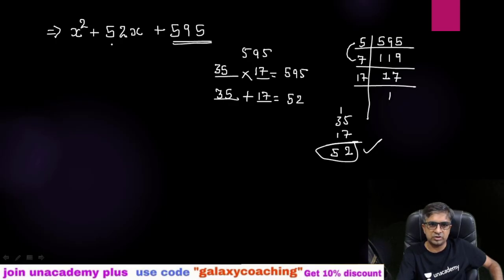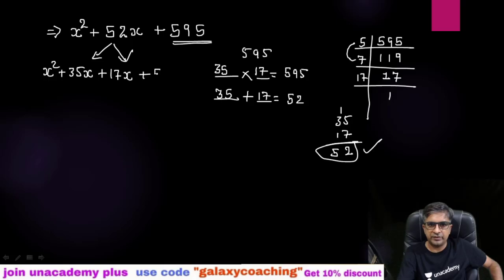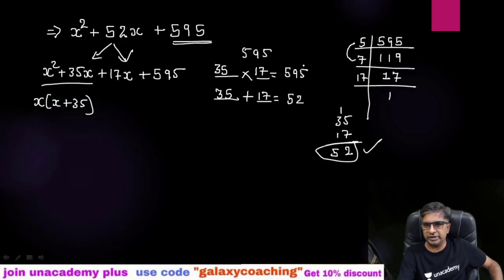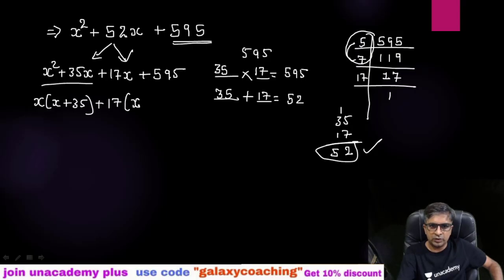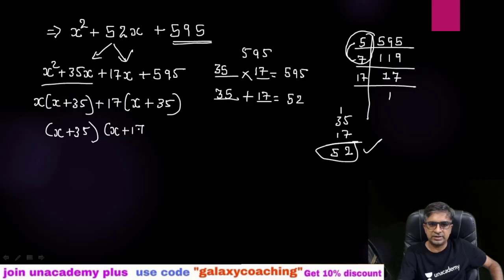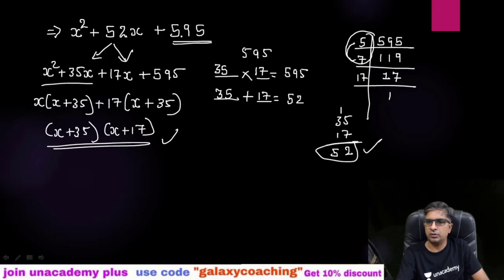So we split the middle term: x² + 35x + 17x + 595. Now take x common from the first two terms: x(x + 35). From the last two terms, take 17 common: 17(x + 35). So the factors are (x + 35)(x + 17). You can see — you just need to find the prime factors of the big number and you will get the answer.